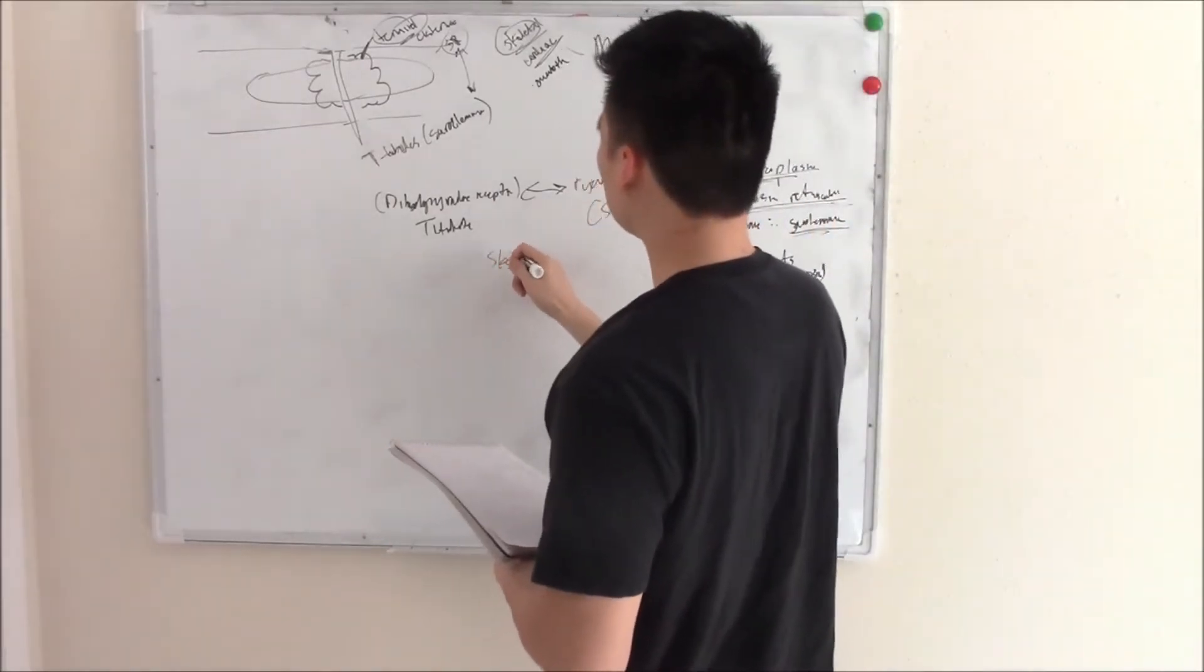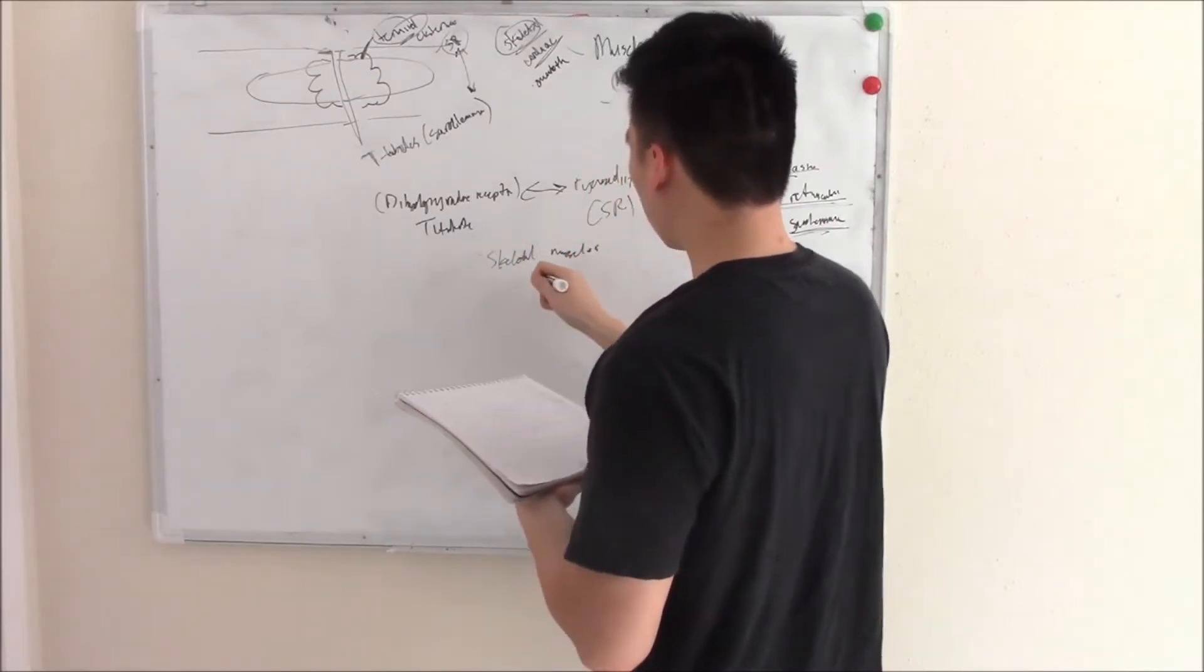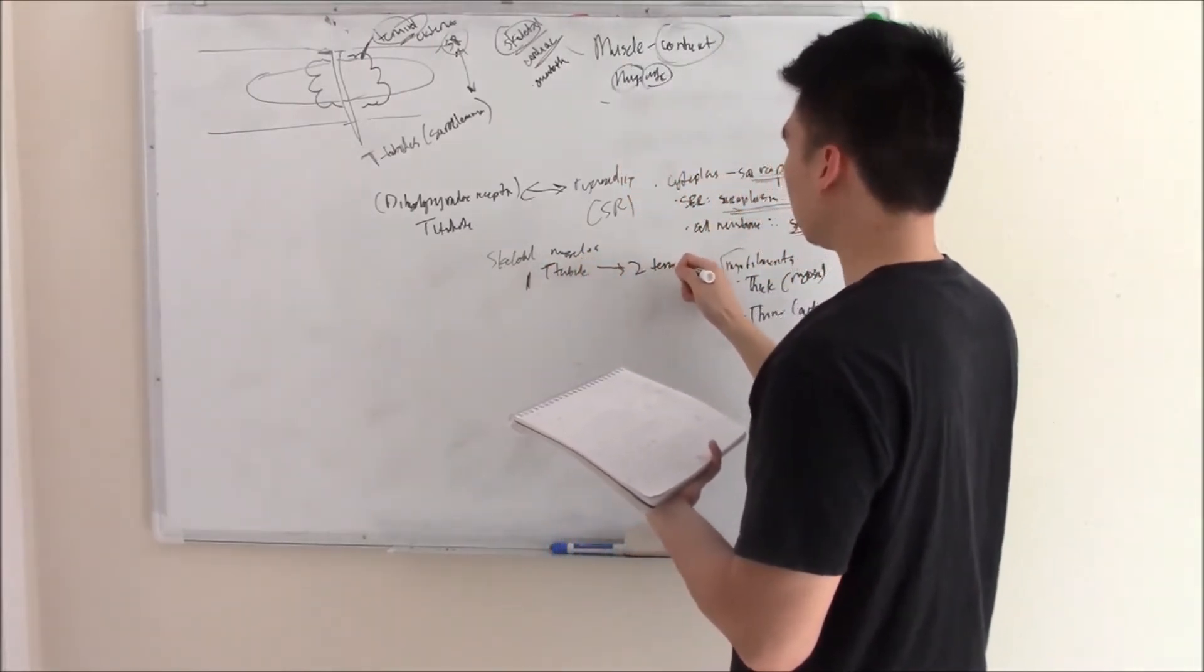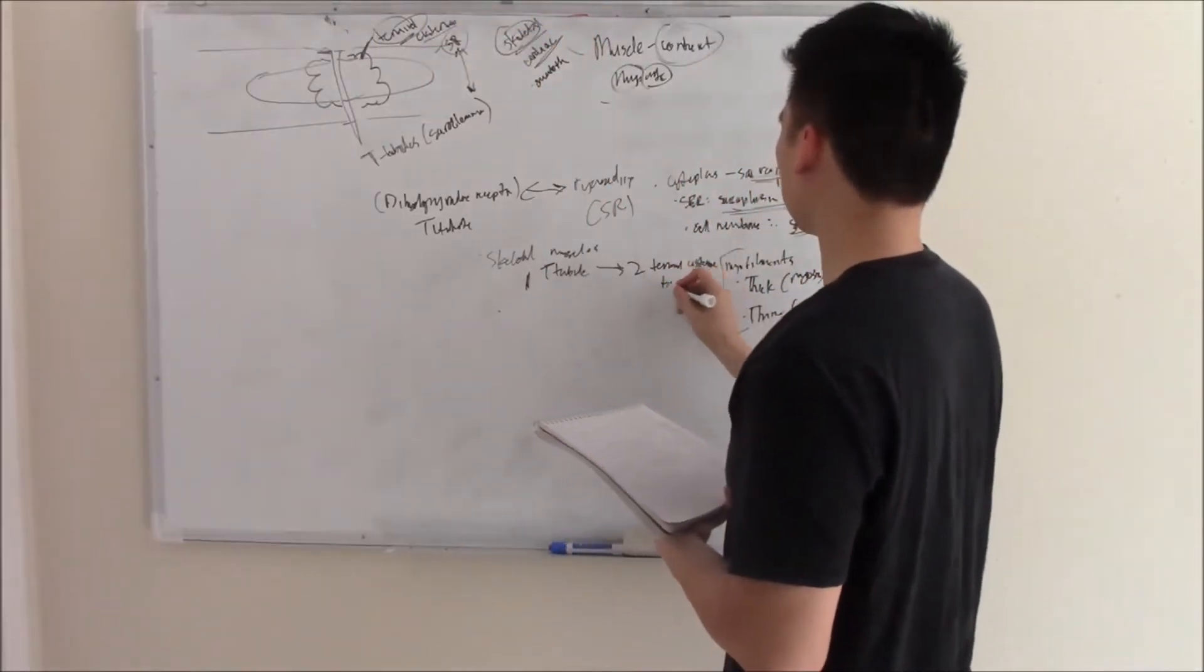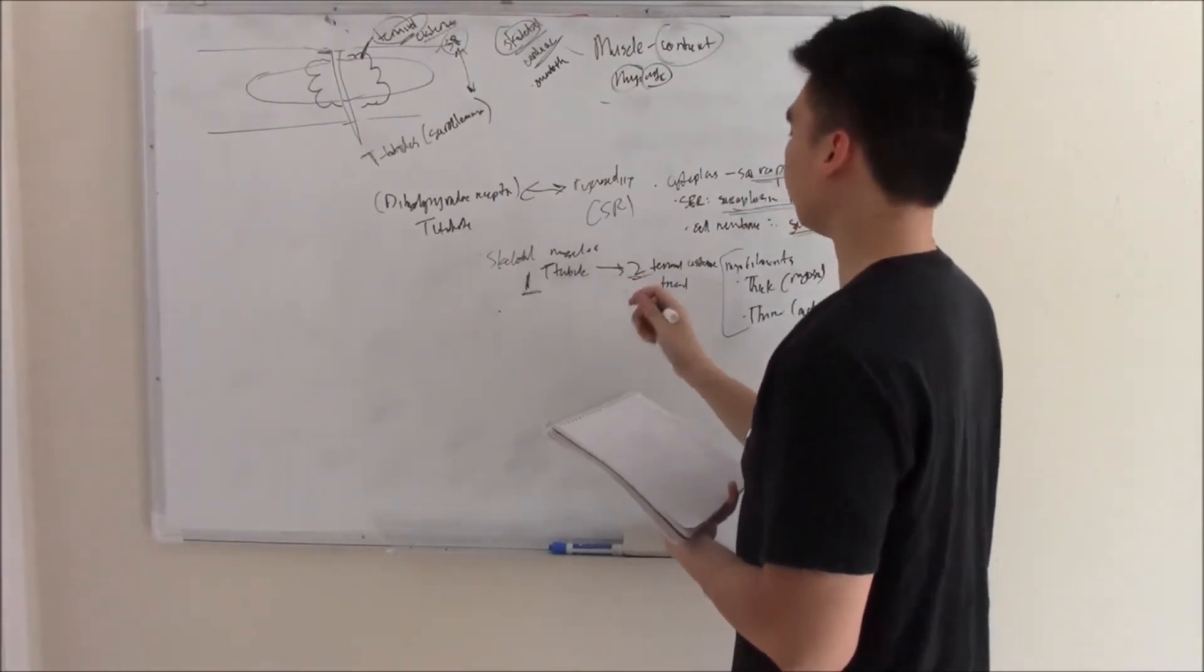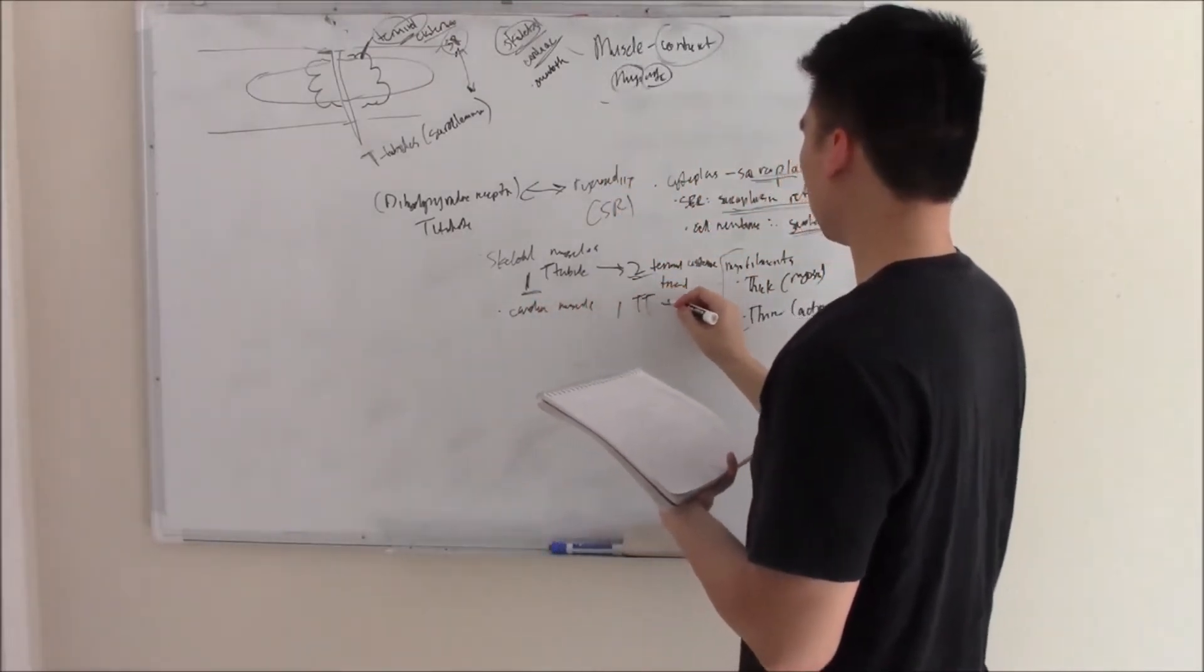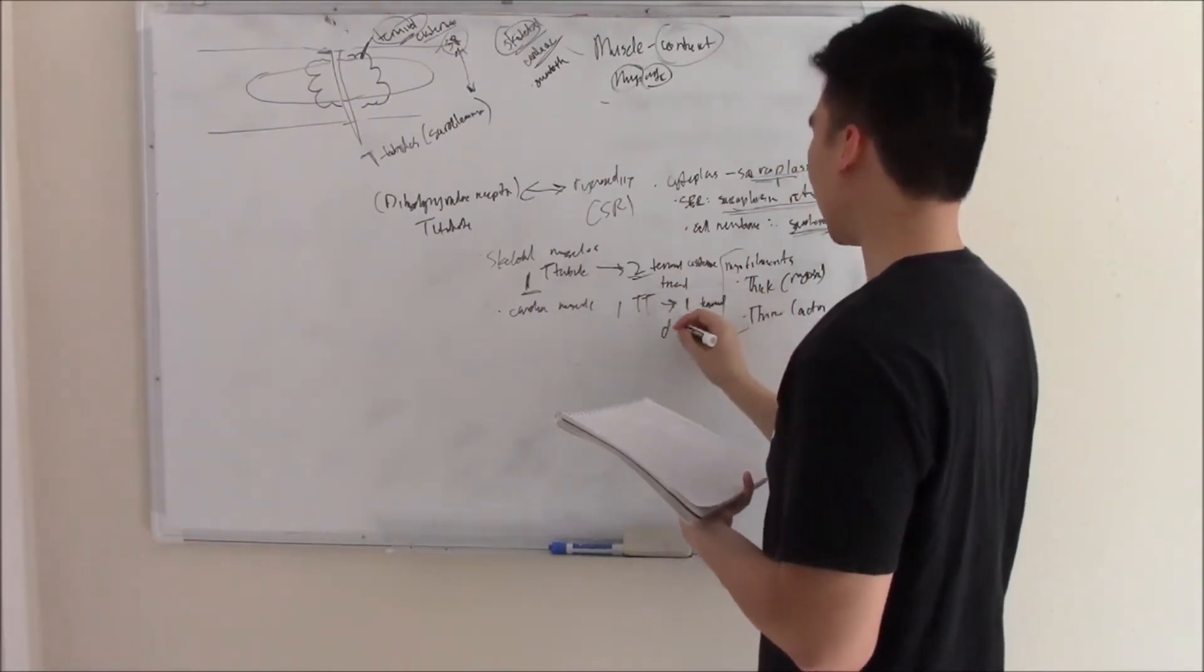In skeletal muscles, you have one T-tubule communicating with two terminal cisternae - we call that a triad because there are three components. In cardiac muscle, you have one T-tubule talking to one terminal cisterna - we call that a dyad.